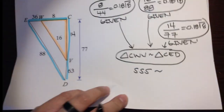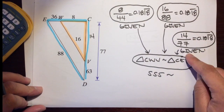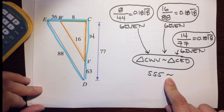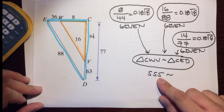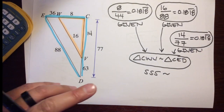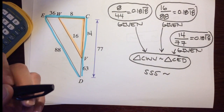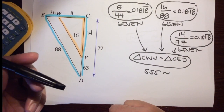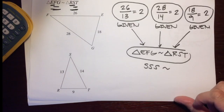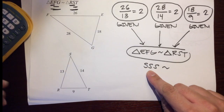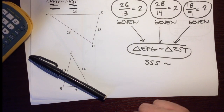One challenge students have is just the formatting. They forget to put the reasons, forget to put the arrows, forget to put the similarity symbol. Make sure you put all of that — if you put SSS without the similarity symbol, it'll be wrong. There you go — that's your first proof using a flowchart to prove that triangles are similar or not, using side, side, side similarity. Have a nice day.